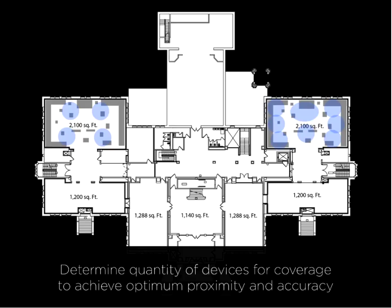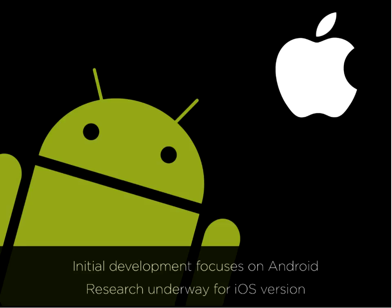We've got two galleries roughly the same size at 2,100 square feet. The one on the right, we're deploying eight beacons; the one on the left, we're just doing four — so we're trying to see which one is going to work best and whether there's a sweet spot in terms of beacon density. Right now, the initial focus is on Android. We're researching an iOS version — the beacons work in that environment as well — and we're hoping to develop a prototype on the iOS side of things.